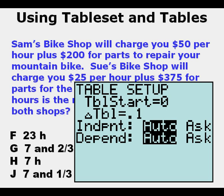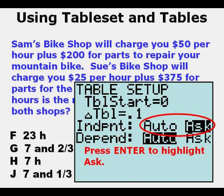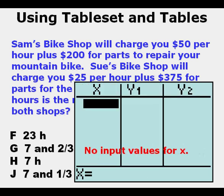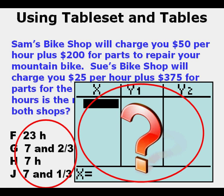Now we'll look at a powerful feature by changing the independent entry from automatic to Ask. We go over to Ask and press Enter to highlight it. This is what we now see in the table view when we press Second, Graph — there are no input values for x; we must enter them. We need to enter them because we have no output values in order to evaluate. In the Table Set Ask mode, we have no established input values; we can enter each one of the answer choices as input values.